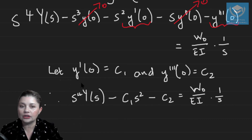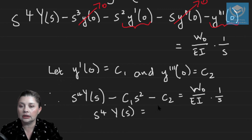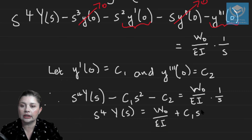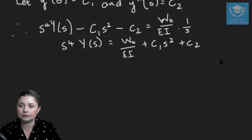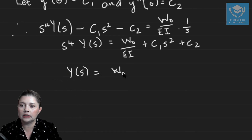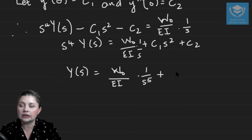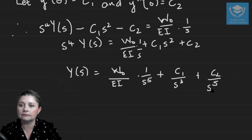Then we isolate the transform. We bring everything over so that S⁴Y(S) equals W₀/EI · (1/S) plus C1S² plus C2, which means: Y(S) = W₀/EI · (1/S⁵) + C1/S³ + C2/S⁴.